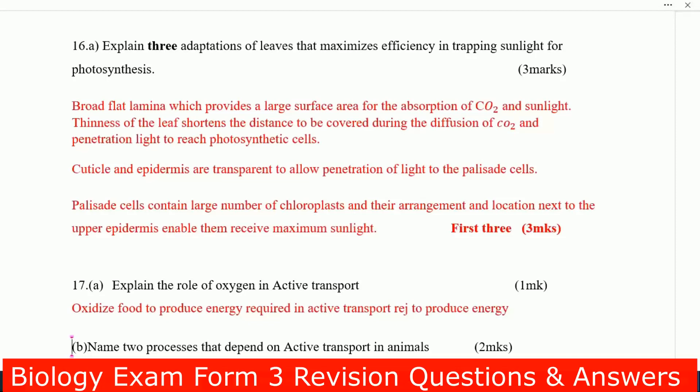Number two, cuticle and epidermis are transparent to allow penetration of light to palisade cell. Next, the palisade cells contain large numbers of chloroplasts and their arrangement and locations next to the upper epidermis enable them receive maximum sunlight.